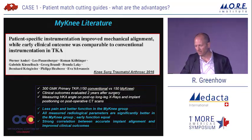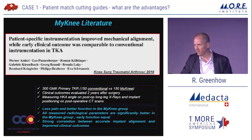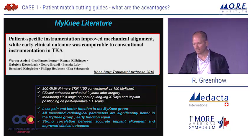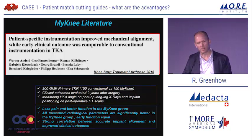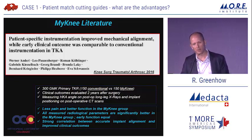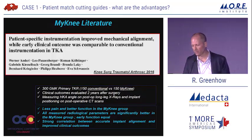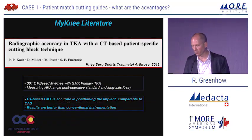The study out of Austria looked at 300 knees — 150 conventional, 150 MINIs — two years out, with long-leg X-rays for alignment and CT scans for component positioning. In summary, they showed less pain and better function in the MINI group. All measured radiologic parameters were significantly better in the MINI group. Early function was equal, but they did show a strong correlation between accurate implant alignment and improved clinical outcomes in both groups.